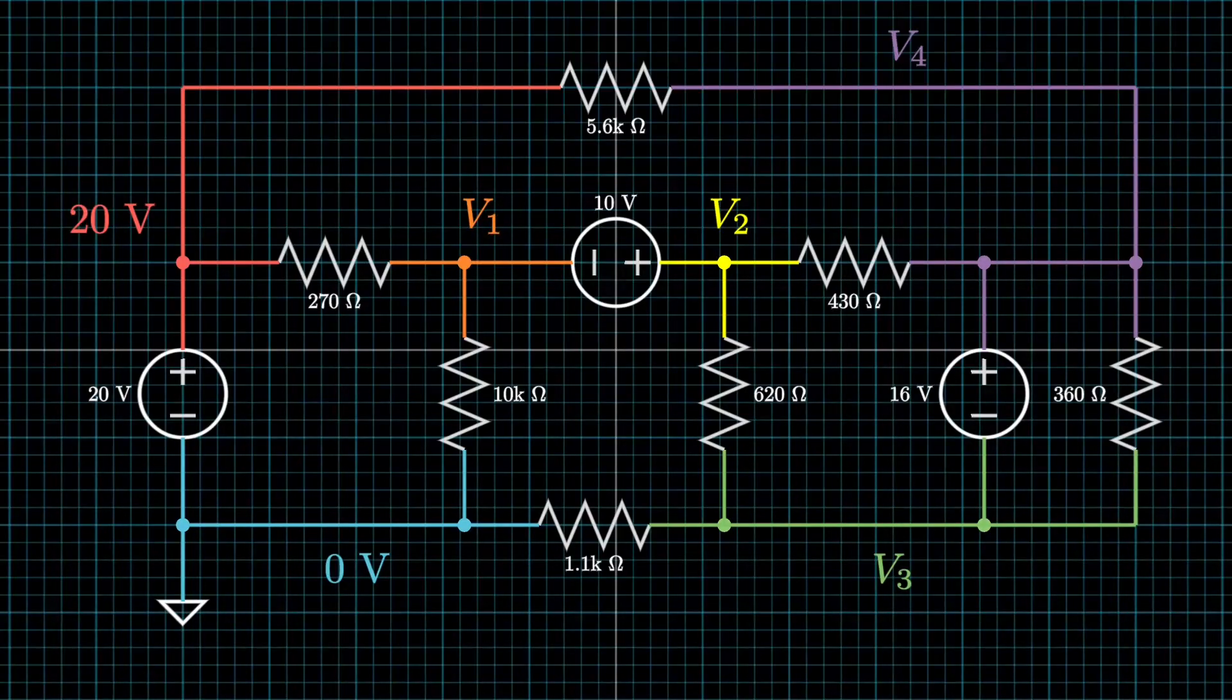So now if we take a look at V1, for example, we don't know what V1 is numerically, and we don't know what V2 is numerically either. So, in this case, we do have to use a supernode. But how do we make a supernode, you may ask? Well, using the property earlier, we know that V2 is just V1 raised by 10 volts, so we write that down.